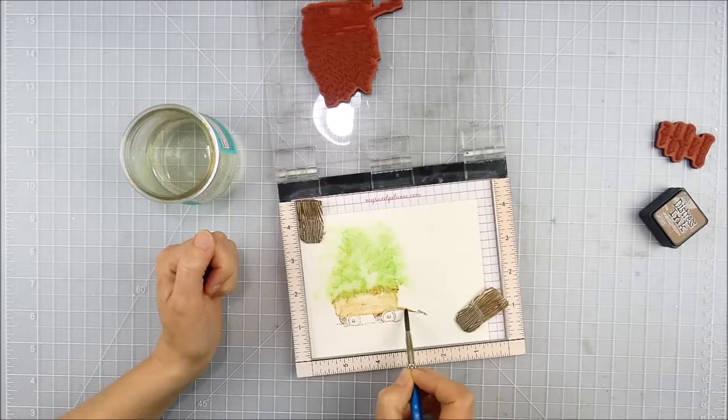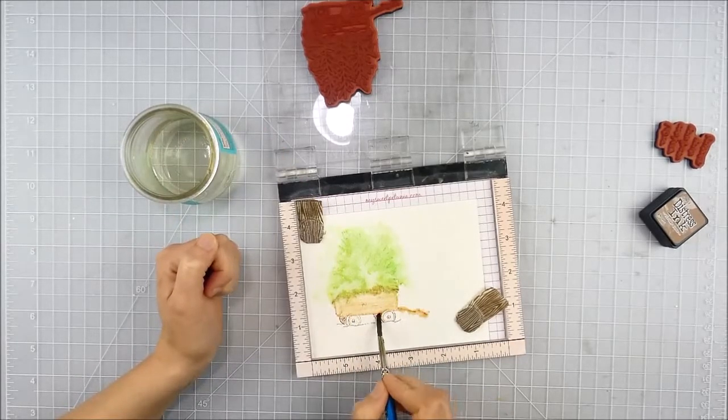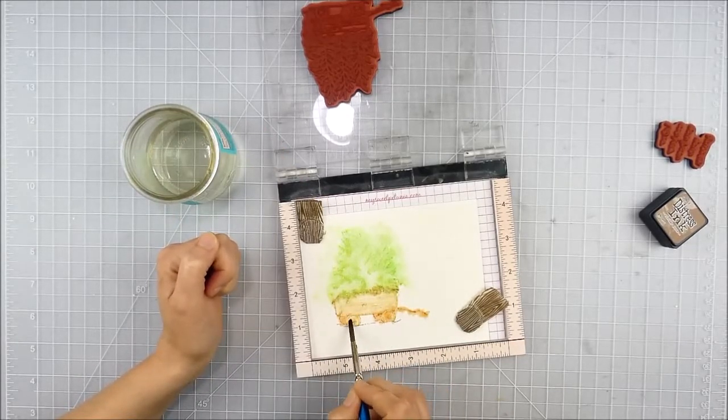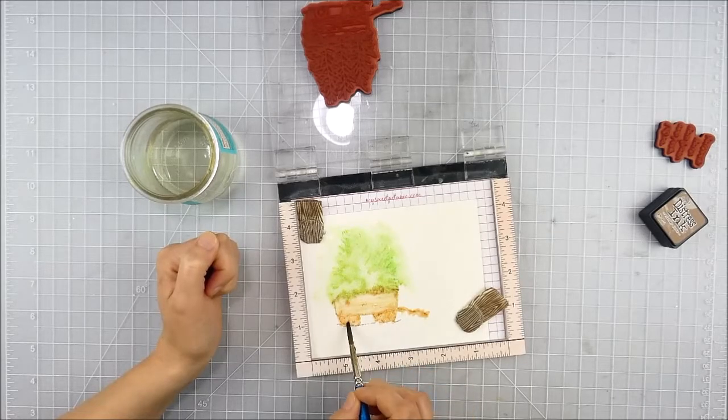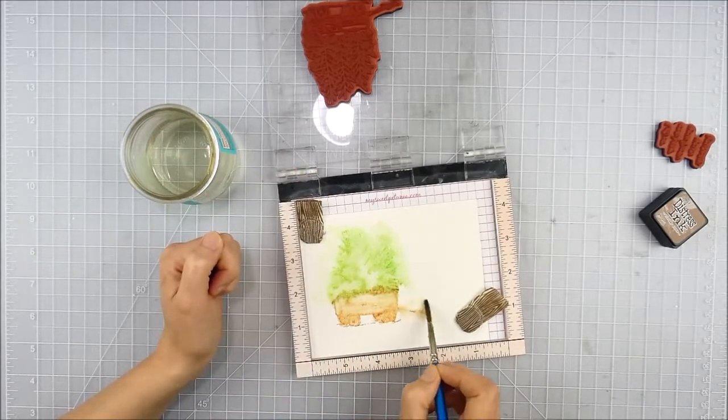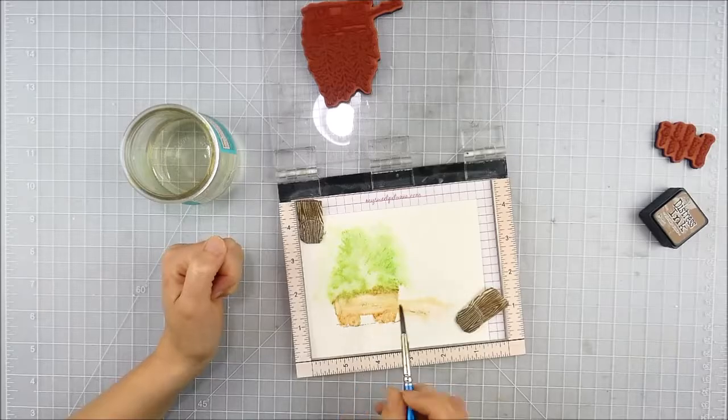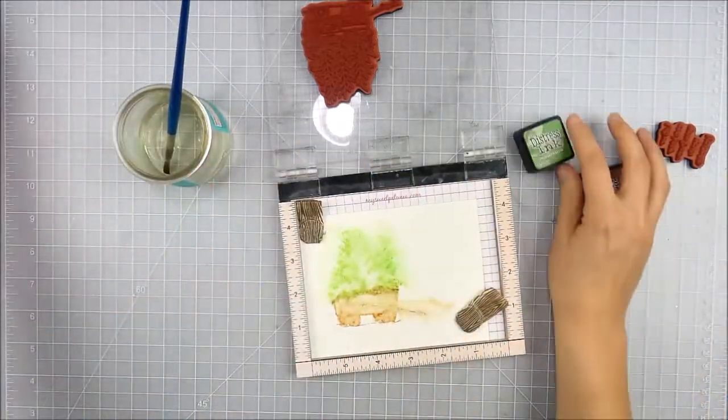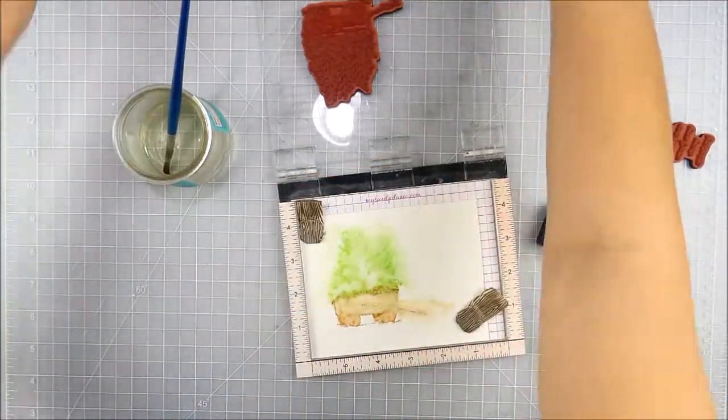Now I'm going in and filling in the wagon. It's a similar idea as how I did the trees, but a little more outlined except for where the handle of the wagon was. I loosely pulled that one out a little bit, but everything else I kept pretty close.